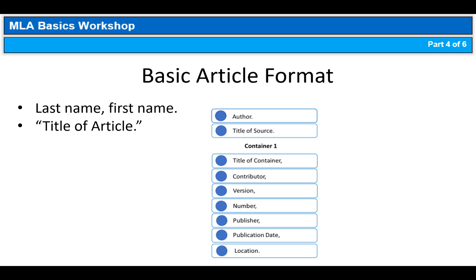Container 1 is where things are going to be a bit different. The first container 1 element is the title of the container — in this case, the title of the periodical. A periodical can be a magazine, an academic journal, a newspaper, or other source published at regular intervals. Notice how the title of the periodical is in italics followed by a comma. Each element in container 1 will be separated by a comma. The next element is the version.